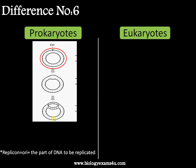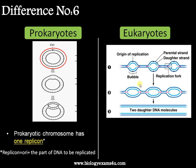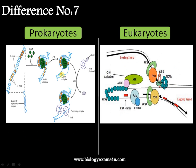Difference number six is regarding the number of replicons. A replicon is a part of the ORI along with the part of the DNA that is to be replicated. In prokaryotes, there is a single replicon — the entire DNA is replicated simultaneously on a single stretch. In eukaryotes, a number of replicons are present, and these replicons may not all be replicating simultaneously; different replicons may replicate at different times.